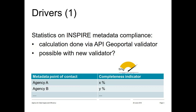The first driver for starting to use the INSPIRE validator is an internal KPI looking at metadata quality. In order to easily measure this we created a small in-house application to generate an overview of metadata compliance, divided per metadata point of contact. We used to do these calculations with the old validator at the GeoPortal and wanted to check whether we could do the same kind of calculations with the new validator.